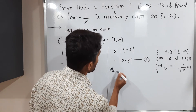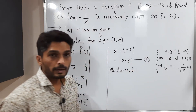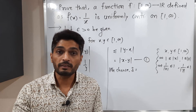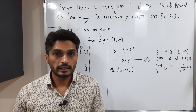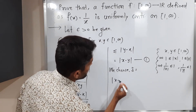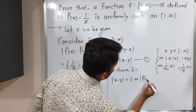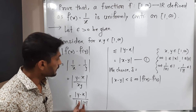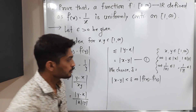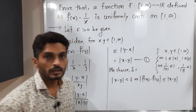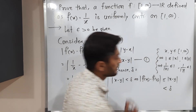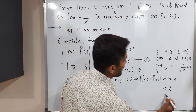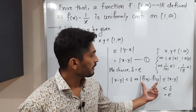We choose delta equal to — let us keep it blank for now and go further. The definition says: if |x − y| < delta, we have to prove |f(x) − f(y)| < epsilon. We have already calculated that |f(x) − f(y)| ≤ |x − y|. Since |x − y| < delta, we have |f(x) − f(y)| < delta. But we need this to be less than epsilon, so our choice of delta should be equal to epsilon.